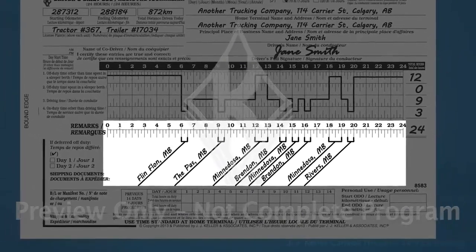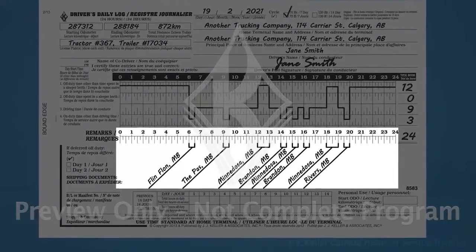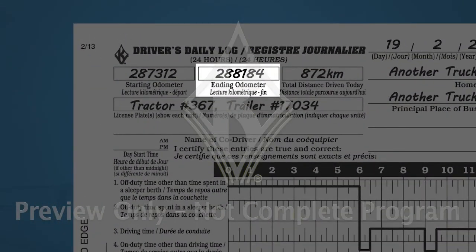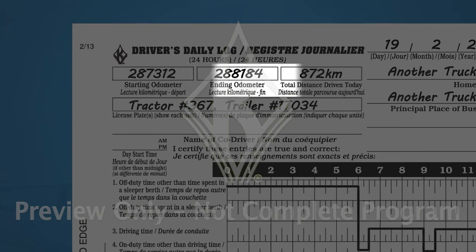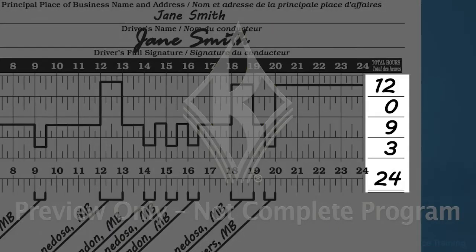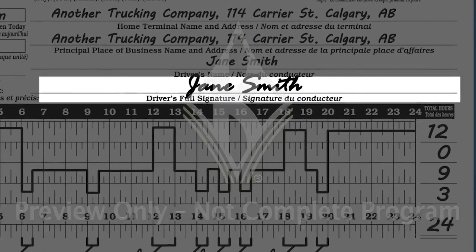Every time your duty status changes, you must enter the name of the location where the change occurred. At the end of the day, enter your vehicle's ending odometer reading and your total distance driven today, minus any kilometers you traveled for personal use — you only need to include your own driving time. Enter your total hours spent in each duty status, which should add up to 24 hours. And lastly, certify the information you recorded as true and correct by signing the record.